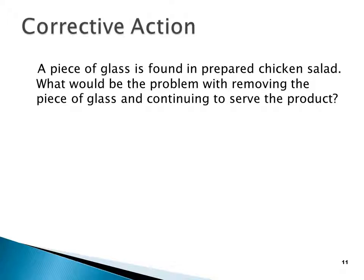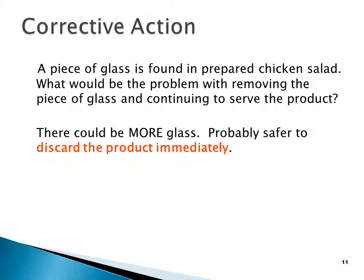A piece of glass is found in prepared chicken salad. What would be the problem with removing the piece of glass and continuing to serve the product? There could be more glass. It's probably safer to discard the product immediately.